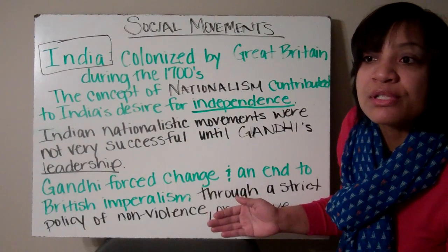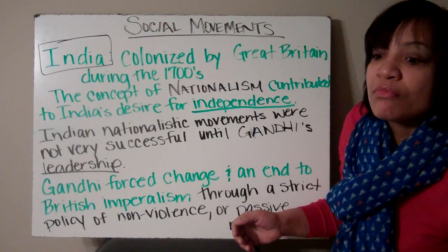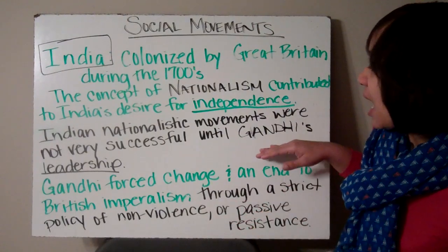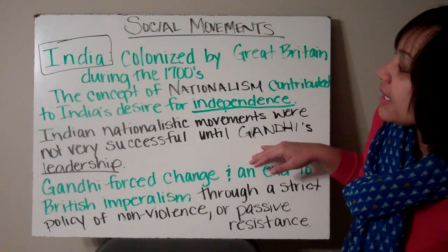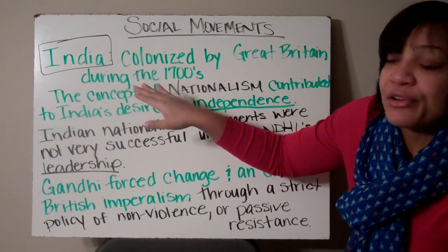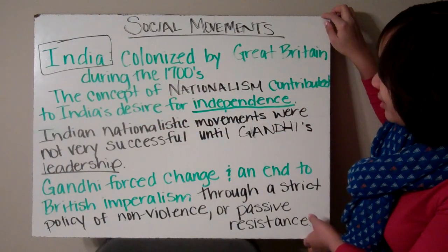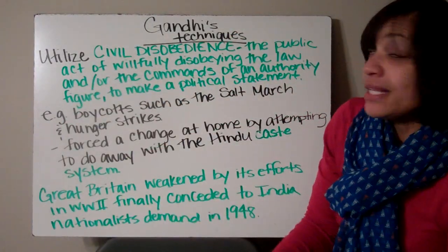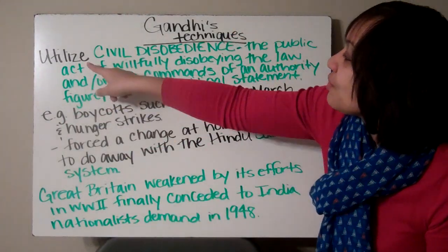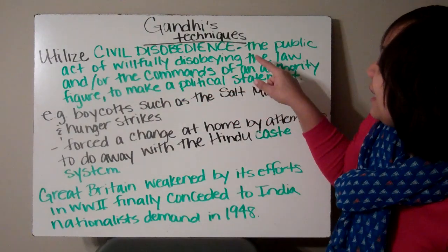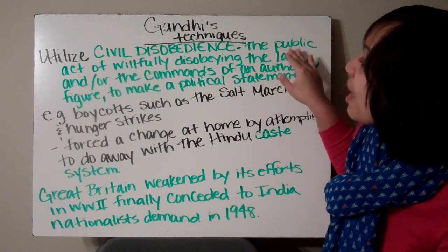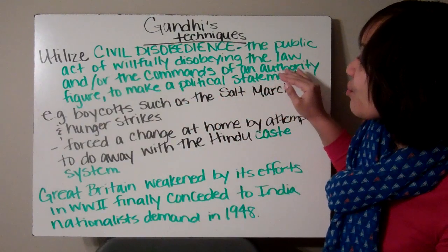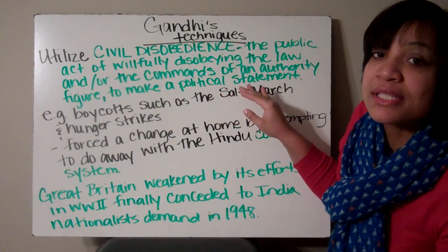The Greensboro sit-ins, boycotts — all of that is non-violence because you're not fighting back. They got those ideals from Gandhi because that's what he did when he was trying to get India its independence from Great Britain. Gandhi utilized what is called civil disobedience, and civil disobedience is the public act of willfully disobeying the law and the commands of an authority figure to make a political statement.